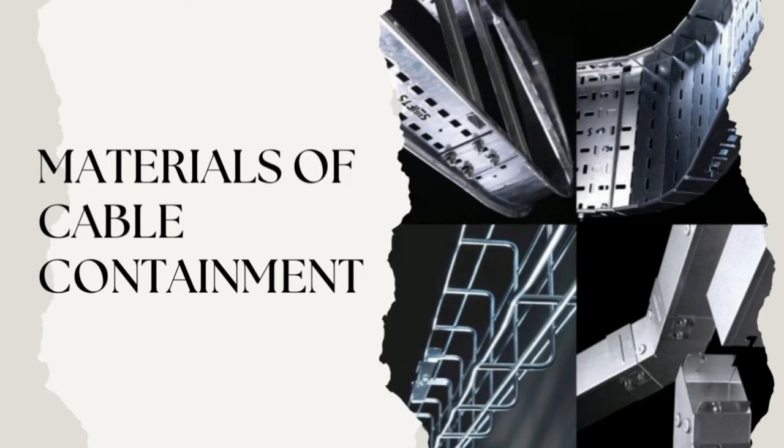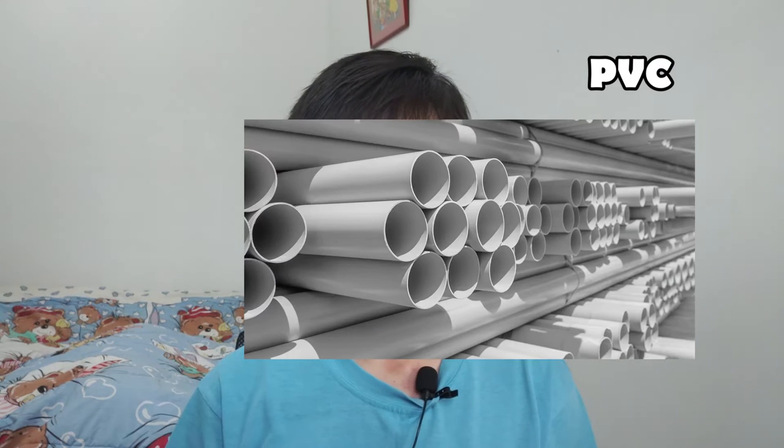After knowing the types of cable containment, we next have to know the materials. Let's talk about the few most commonly seen materials used in construction. First is the hot dip galvanized (HDG), which looks like this. Then we have the epoxy powder coated type, which comes in many colors. We also have the PVC type and the stainless steel type.